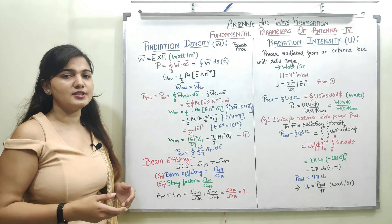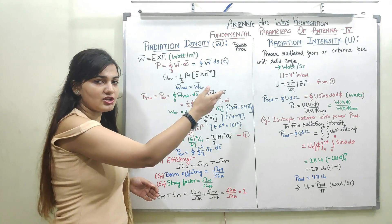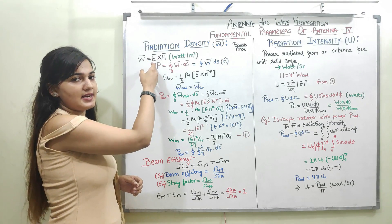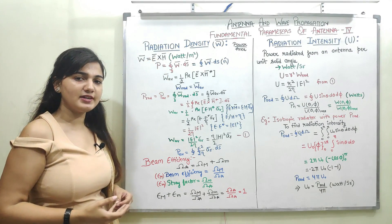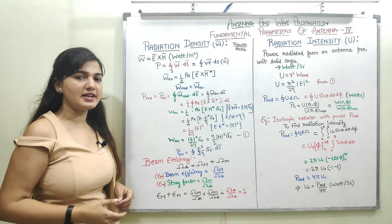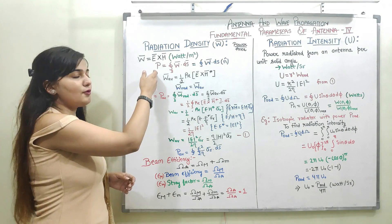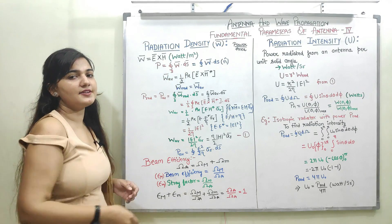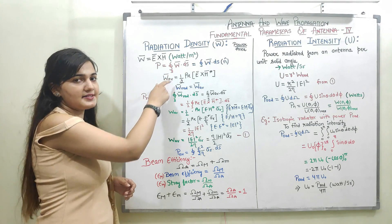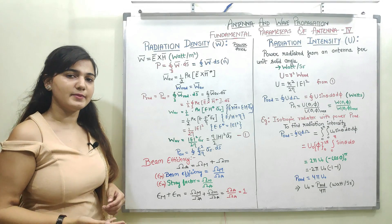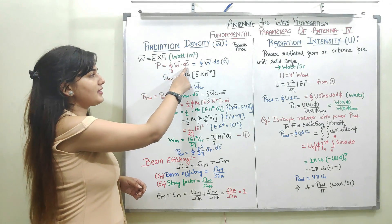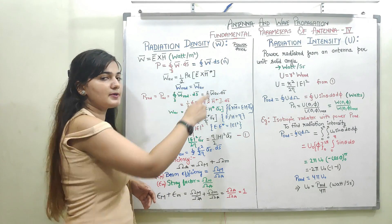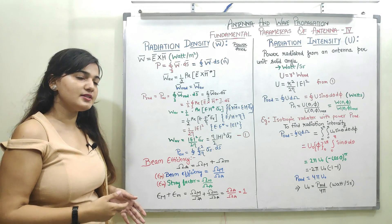We will now see the mathematical definitions of radiation density and radiation intensity and then relate them. The power density is represented as E cross H, where E represents the electric field component and H represents the magnetic field component of the EM wave. The total power can be obtained by integrating the power density over the entire surface S, where DS represents the infinitesimal area. DS can be represented with the help of a unit vector N-cap perpendicular to this surface.